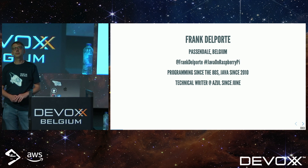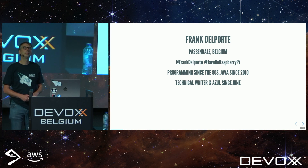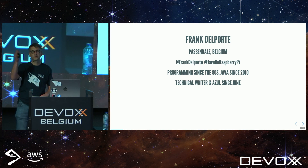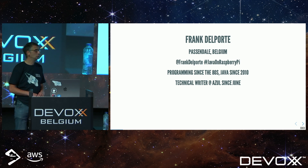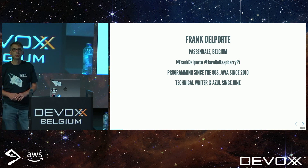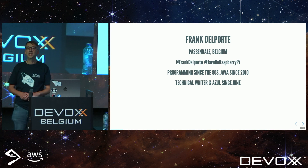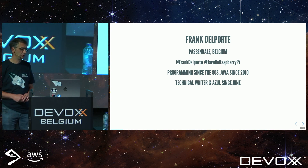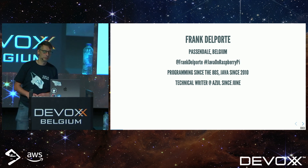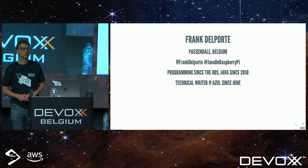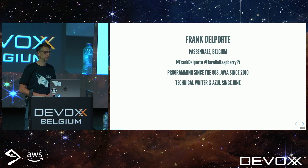Just before the summer, I joined Azul. Azul is one of the sponsors of this event. You can find our booth below in the exhibition hall. We are an OpenJDK distributor, so we build a version of OpenJDK — actually two versions. Talk to my colleagues or me at the booth and I'll be happy to give you a lot of information.